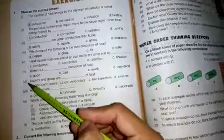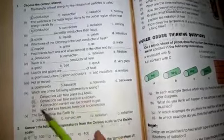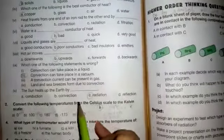Number four A copper, number five A conduction, number six B bad, number seven B poor conductors, number eight B upwards, number nine second convection can take place in a vacuum, number ten C radiation. Now I'm going to question number two: convert the following temperatures from the Celsius scale to the Kelvin scale.